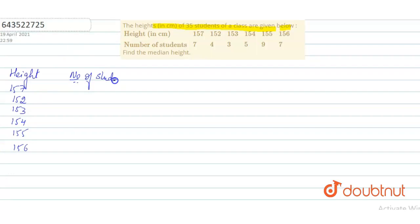Number of students, that is frequency, we can take it. So frequency is 7, 4, 3, 5, 9 and 7.